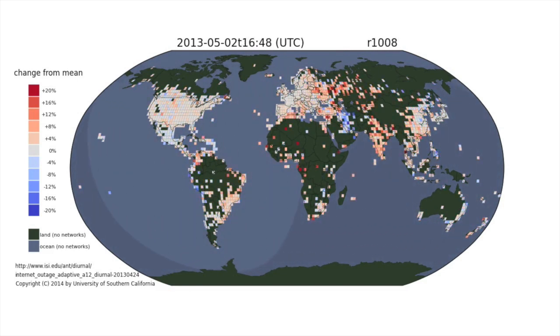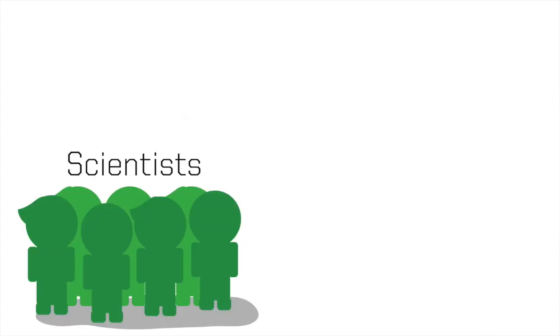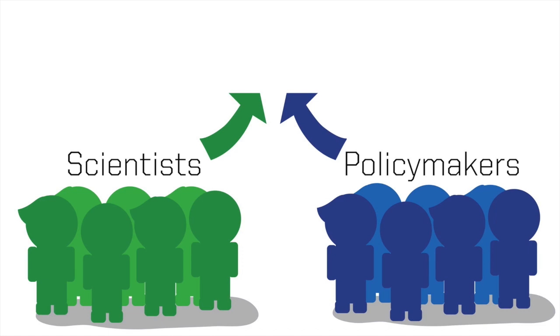This study establishes a baseline for internet activity, allowing us to better understand just how big the internet really is and how resilient it is as a whole. This will allow scientists and policymakers to develop better systems to measure and track internet outages, such as the one that struck New York after Hurricane Sandy.